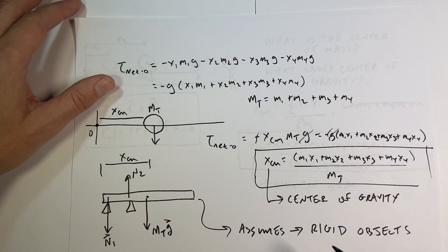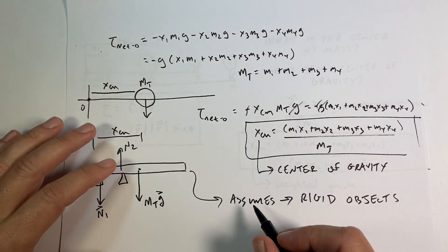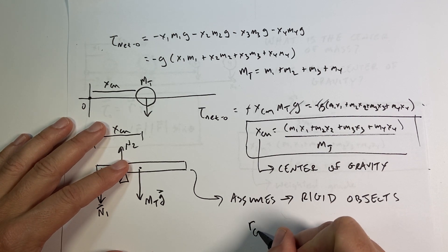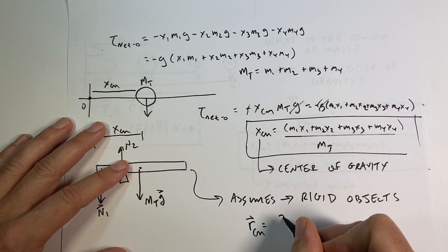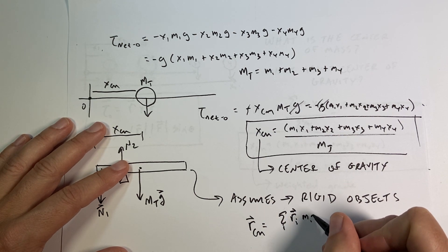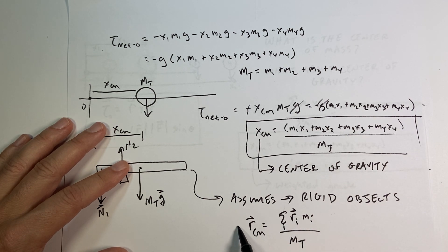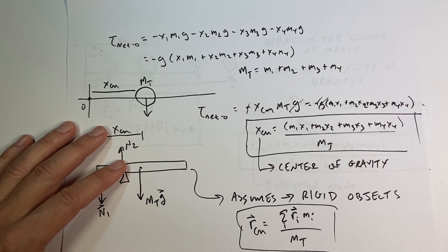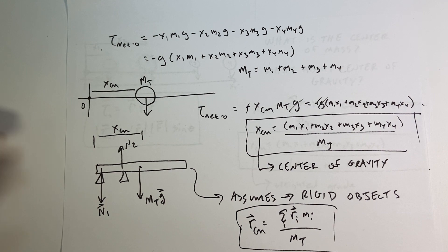Oh, I do want to write one thing. The center mass in multiple dimensions - so that there is a vector formula for that too. So you can find the center mass in the x direction, the y direction, the z direction, and that's that.